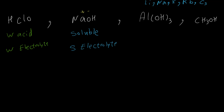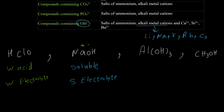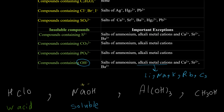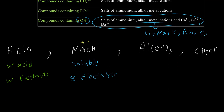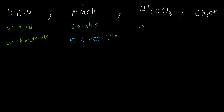The next example is aluminum hydroxide. It is a base, but if we check the solubility chart, aluminum does not belong to the alkali metal exceptions. Hydroxide ions are insoluble except for those specific cations, and aluminum is not among them. So aluminum hydroxide is insoluble and therefore a weak electrolyte. The last example is methanol — it is an alcohol, a molecular compound with no ions, so it is a non-electrolyte.